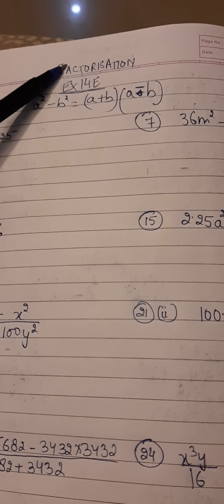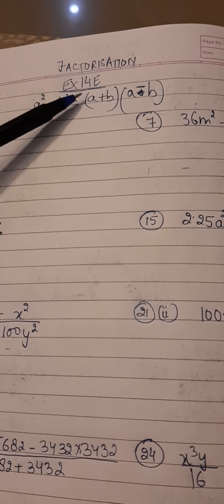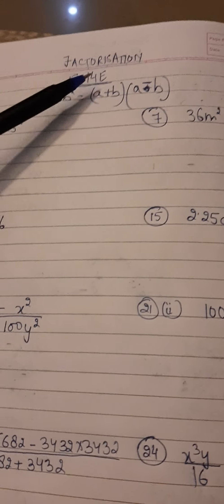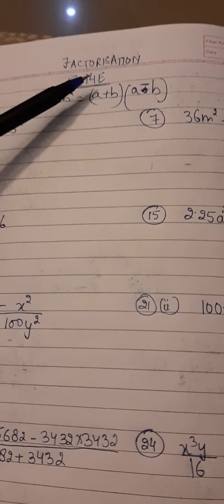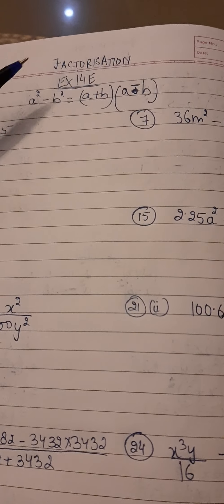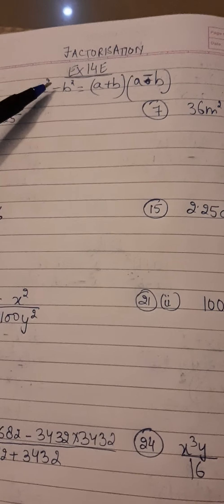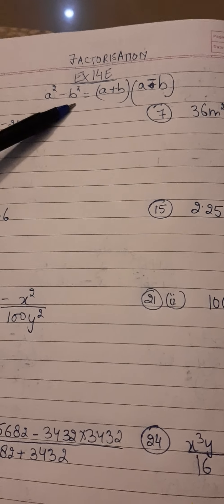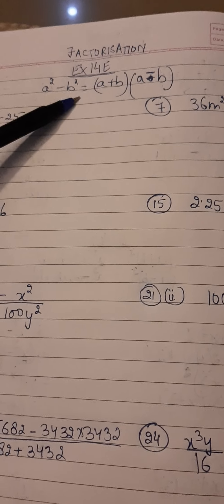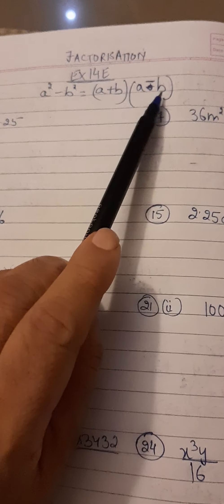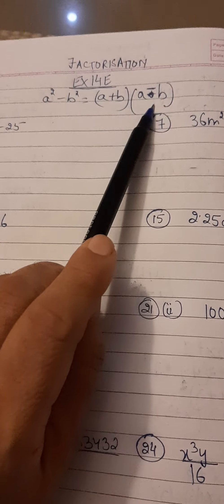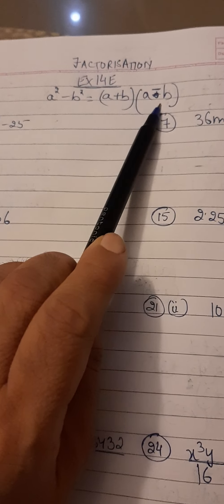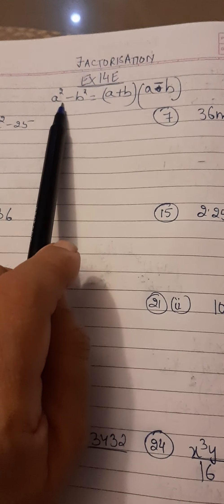This is the third video of the chapter on Factorization. I am going to take Exercise 14E, as we have already done 14A, 14B, 14C, and 14D. This exercise is based on the formula A² minus B², and the factors of A² minus B² are (A+B)(A-B), as you have done in algebraic identities — the product of (A+B)(A-B) is A² minus B².